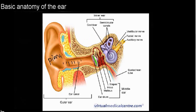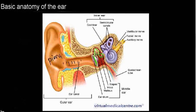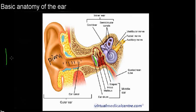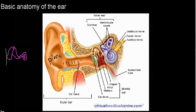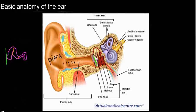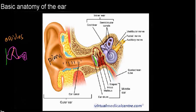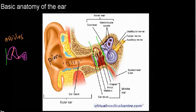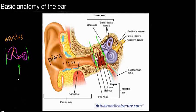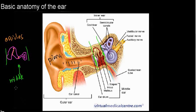Now we're entering the middle ear on the other side of the eardrum, where we can see three bones. These bones are called the ossicles. From these three bones, we move to the inner ear. This region — from the eardrum to the ossicles — is our middle ear.